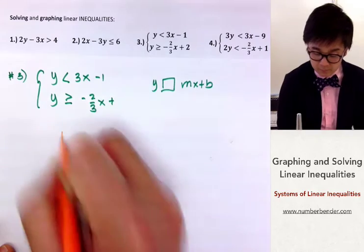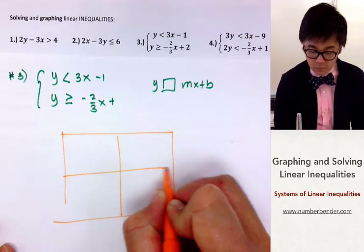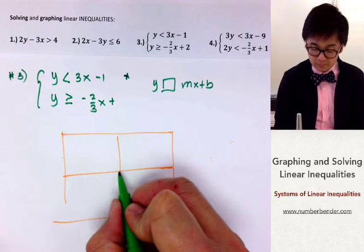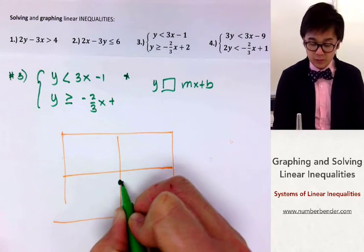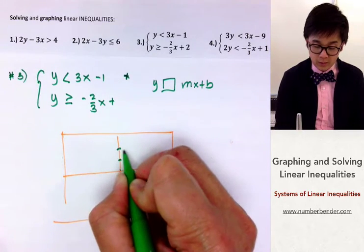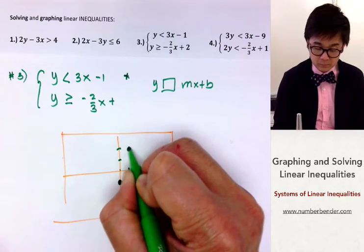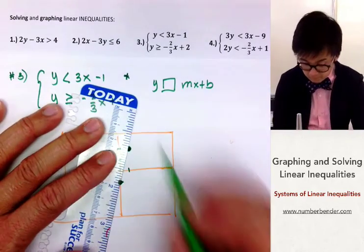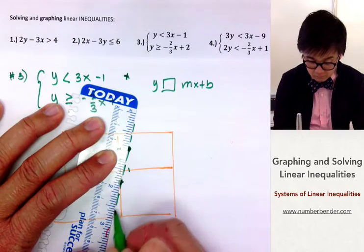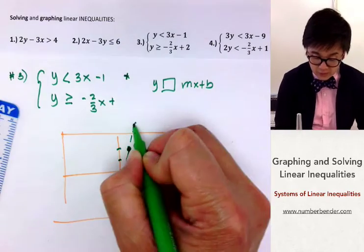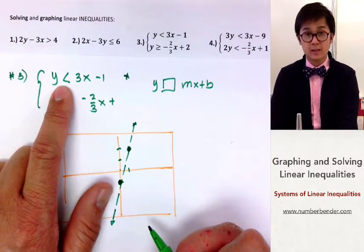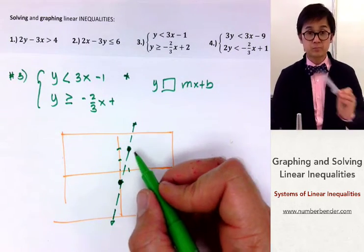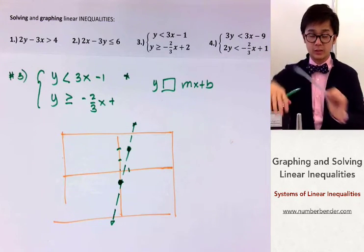For the first inequality, using a green graph, we start at negative 1 and move 3 units up and 1 unit across. This is our first line, drawn as a broken line. We shade below the line because it's a less than symbol — every time you have less than or less than or equal to, you shade below the line.